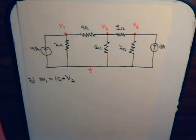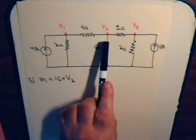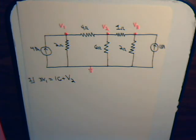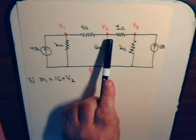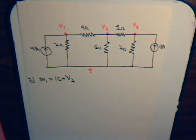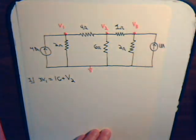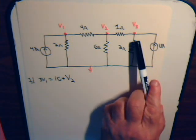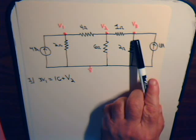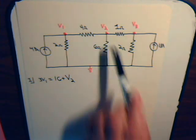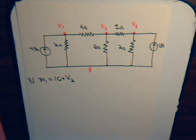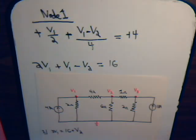We have 3 unknowns: V1, V2, and V3. As we write our 3 nodal equations — one for each node — we'll have 3 unknowns and 3 different equations, so we should have no problem solving for each of these unknown voltages. Let's now look at node 3.